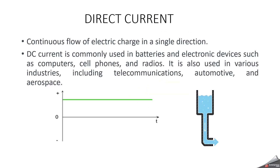Direct current. Direct current means its continuous flow of electric charge in a single direction. Basically, DC will be used — most commonly used in batteries and electronic devices like computers, cell phones, and radios. And it is also used in various industries including telecommunications, automotive, and aerospace. Majorly, you can keep in mind that wherever we are using batteries, there we always have DC direct current.